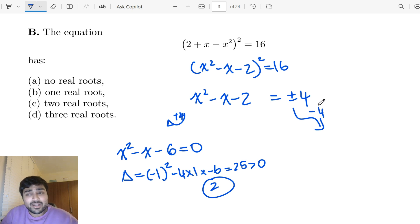And what about when I have minus 4 here? Well, that's going to give me the equation x² - x + 2 = 0. And again, if I look at the discriminant here, it's (-1)² - 4(1)(2), which is -7, which is negative. And so therefore, I only have two real solutions. So the answer is C.